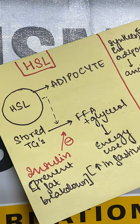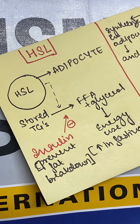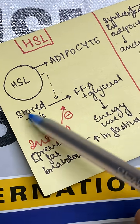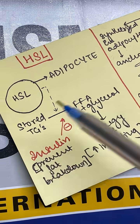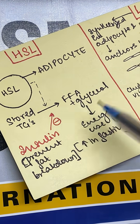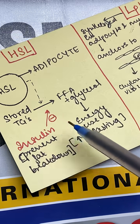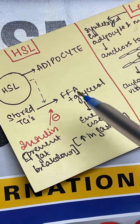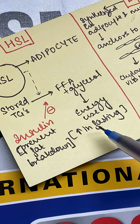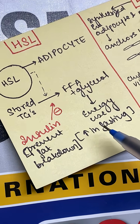Hormone-sensitive lipase is present in the adipocyte. It helps in the breakdown of stored triglycerides to free fatty acids and glycerol. These fatty acids are then used for energy production. Obviously, if there's a breakdown of something to produce energy, this is happening in the fasting state.